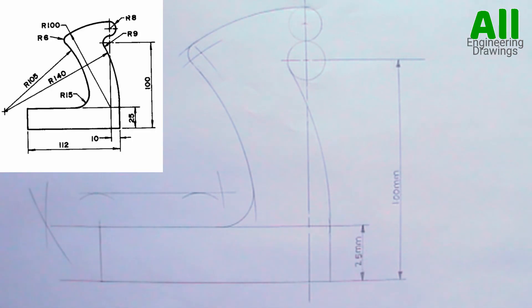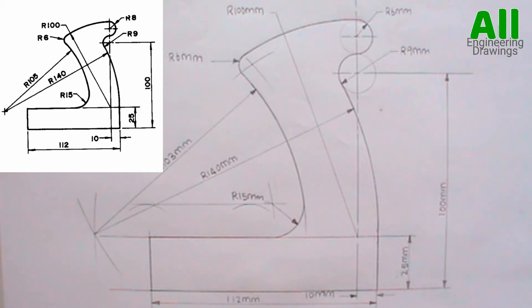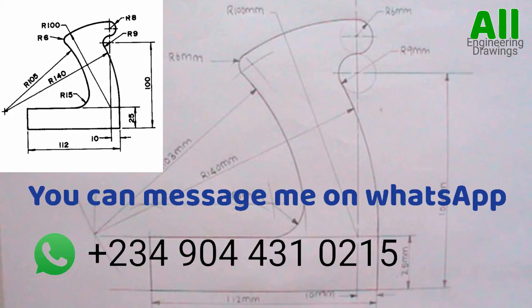So this is the solution to the above tangential arc. Now all that is left is to make bold the parts that are supposed to be bold and complete the dimension. You can send the question to the WhatsApp number displayed and I will solve the questions and send a video of the solution to you. It's completely free — it will not cost you a dime.